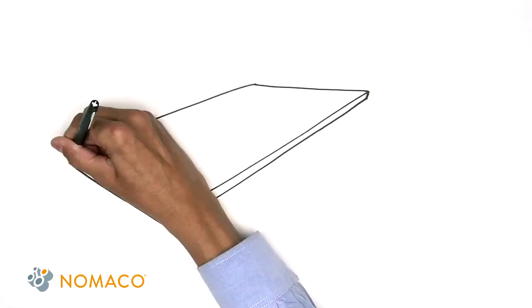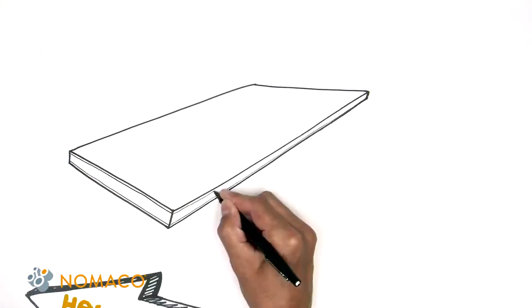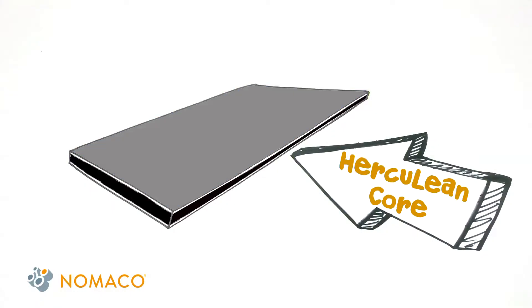This strength can be multiplied by combining the air-like Herculene core with a variety of laminate skins to create seamless composites specific to customer requirements.